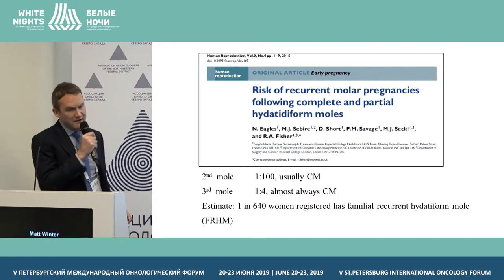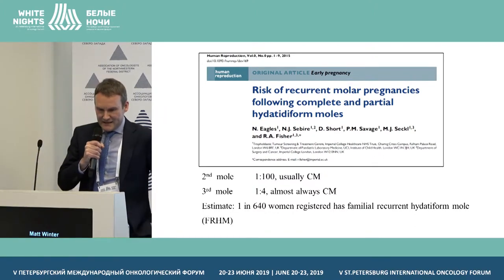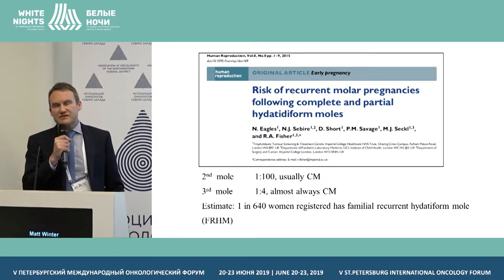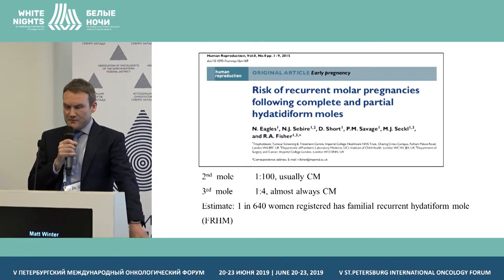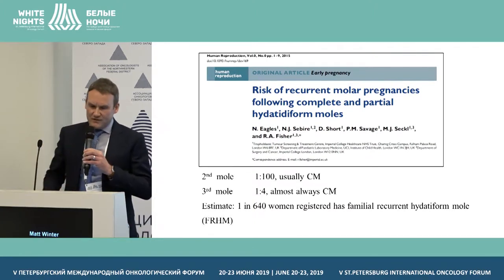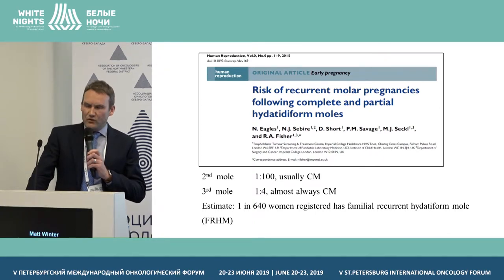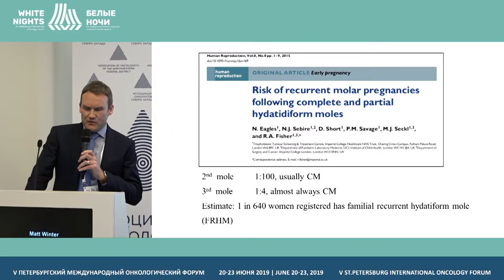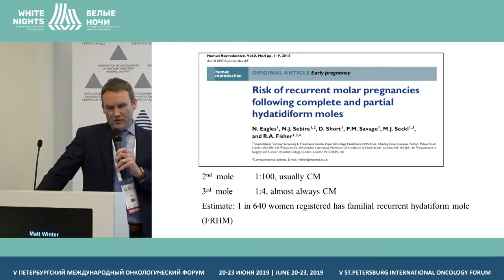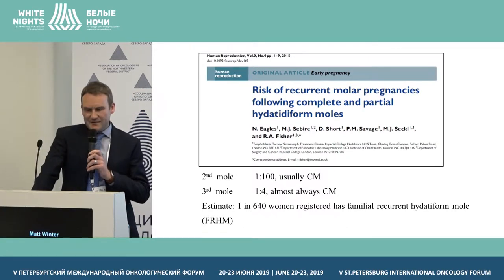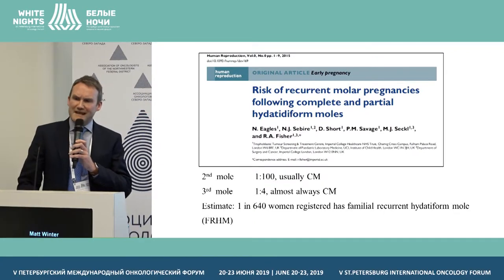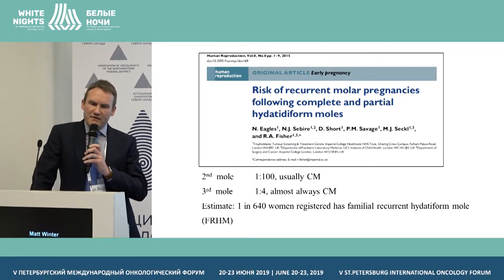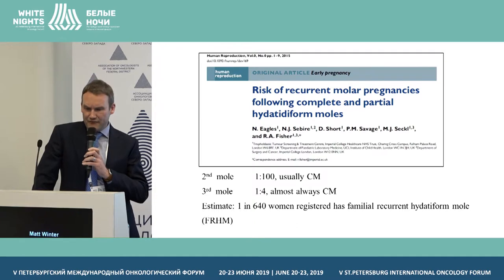A paper published by the Charing Cross Group looked at 16,000 cases registered over a 20-year period and their subsequent pregnancies. This showed that once you've had a complete mole, the risk of developing a second mole was about 1 in 100, usually associated with a complete mole. Once you've had two moles, the risk of developing a third is about 25%, almost always a complete mole. Following a partial mole, there was only a very small increase in risk of a second mole — no real increase in complete mole risk — but the risk of a second partial mole is about twice that of the general UK population.